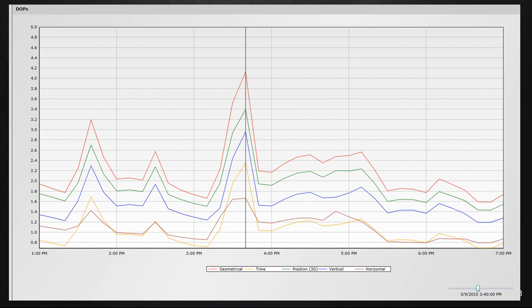That is a quick rundown on what the dilution of precision is. Understanding that the lower the number, the better quality of accuracy of data that you're going to be collecting. The higher the number means the poorer the quality, and it can get so high that maybe you should not collect data at all for that given period of time, as your accuracy or precision is not going to be sufficient.